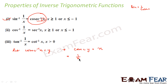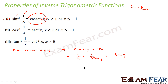So 1/x = 1/cosec(y), and since 1/cosec(y) = sin(y), we get y = sin⁻¹(1/x).